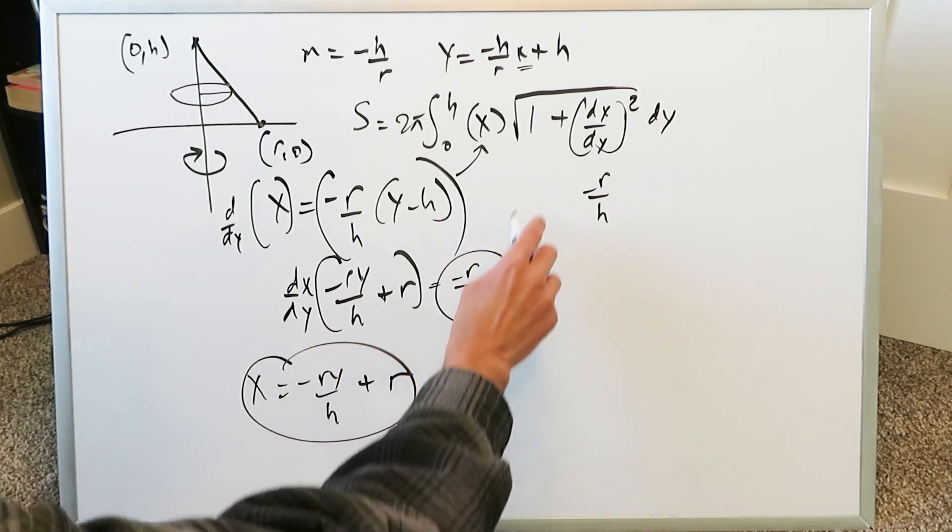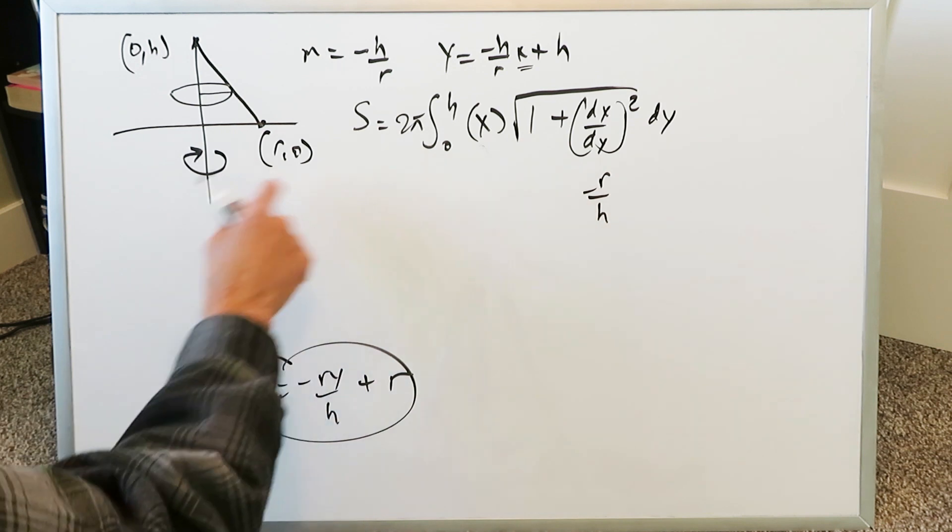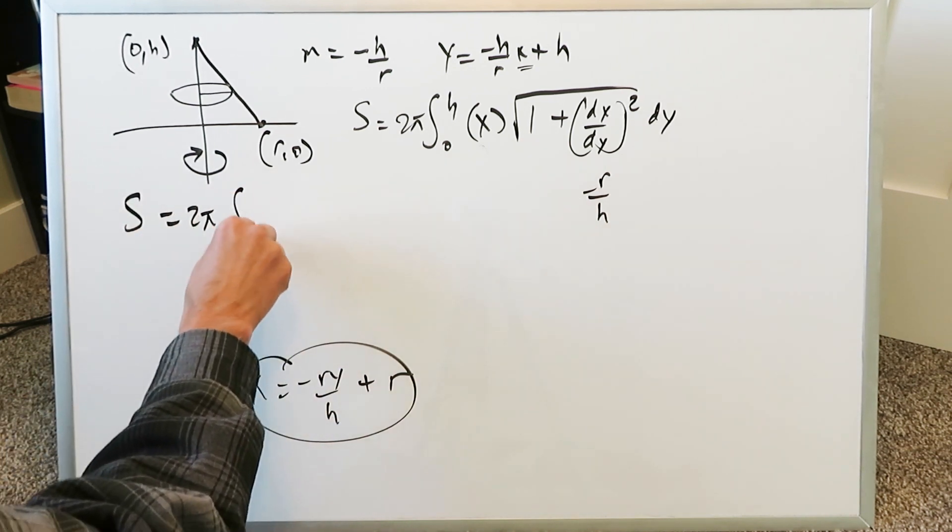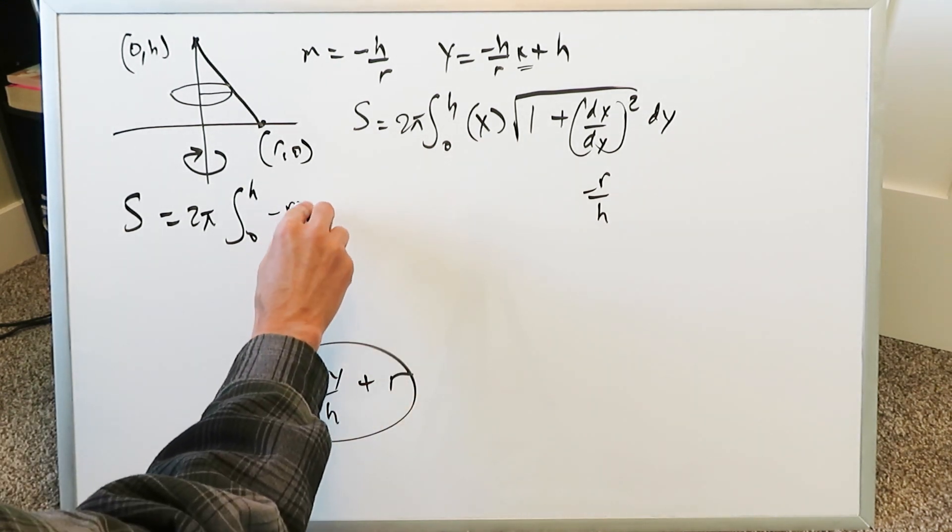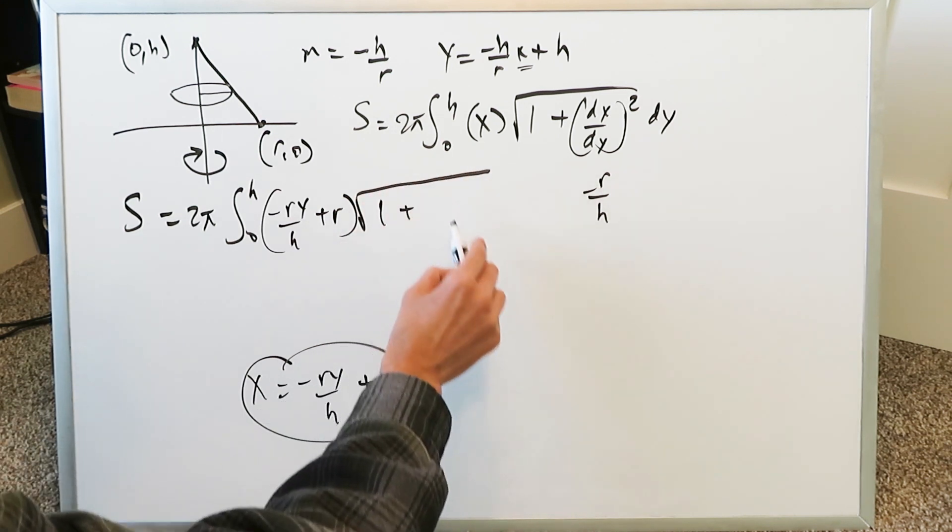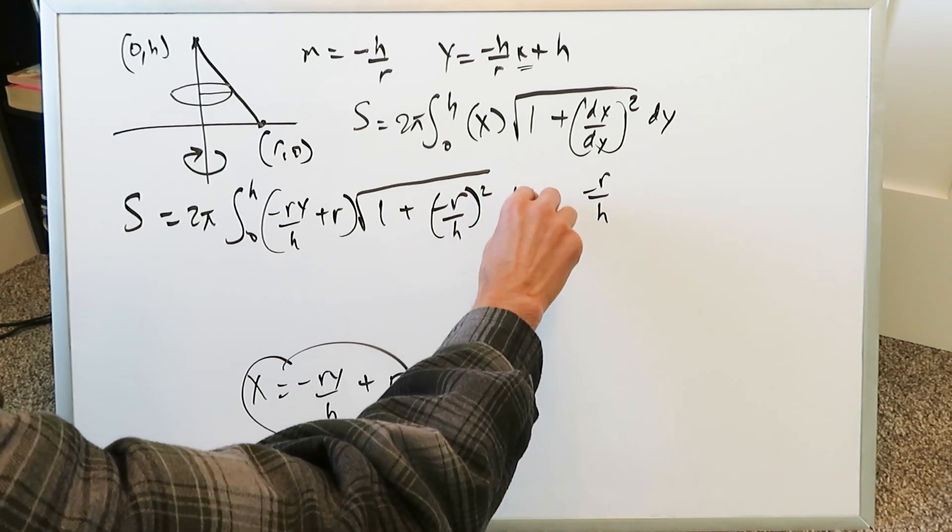These are the two pieces of information I need now to plug in there. My entire scheme over here, the template for surface area becomes 2 pi, we're looking from 0 to h. We have a certain x equation which is minus ry over h plus r. We have to put everything right over here: 1 plus dx over dy whole square, which is minus r over h whole square, dy.